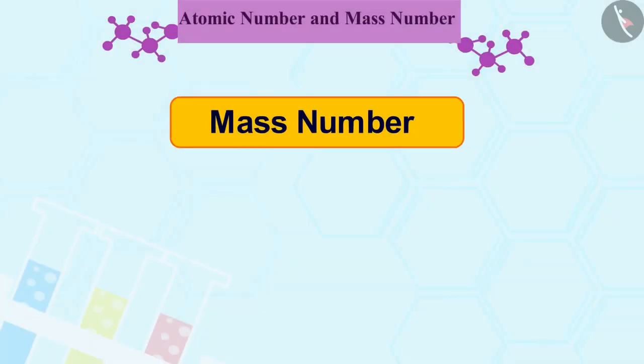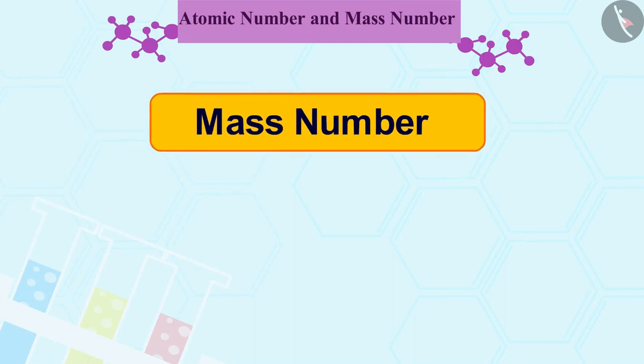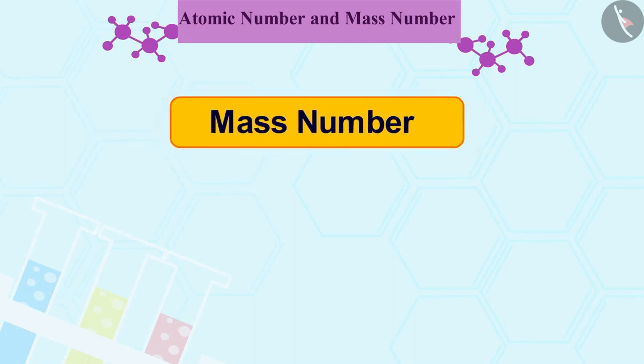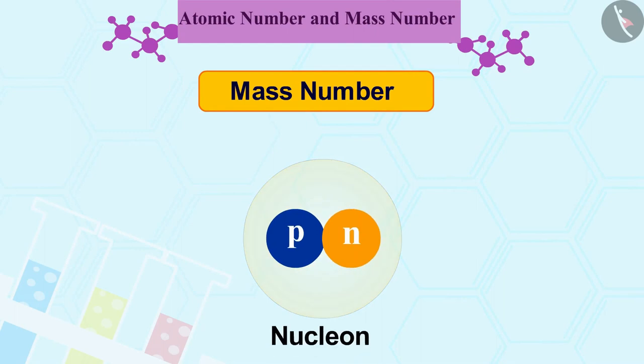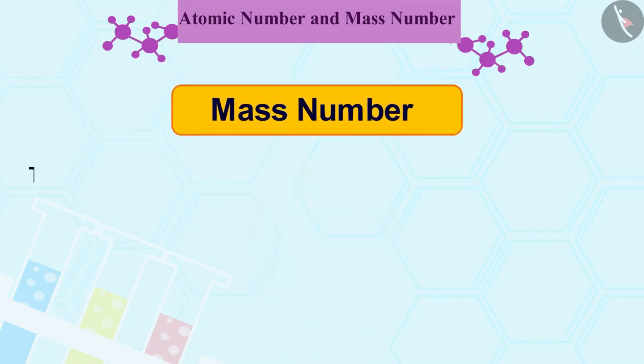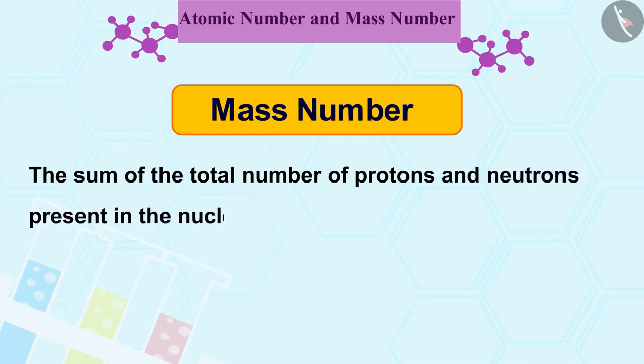Let us go ahead and see what is a mass number. Mass of an atom is practically due to the protons and neutrons which exist in the nucleus. These are present in the nucleus of an atom. Hence, protons and neutrons are also called Nucleons. The sum of the total number of protons and neutrons present in the nucleus of an atom is called Mass Number.